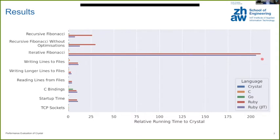Just-in-time compilation has a great impact on the recursive Fibonacci implementations. But other than that, it's sometimes a bit faster or a bit slower, but in a very similar range. One thing I found quite interesting was that the TCP sockets took the same amount of time in all languages.